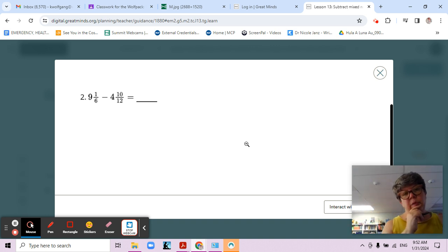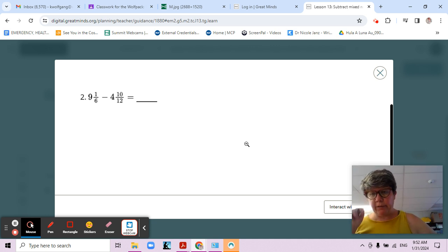Look at those whole numbers: nine minus four would be five, so I'm thinking that our answer is going to be between four and five. So there's our first step - estimate. Our next step is to see if we're ready to subtract.